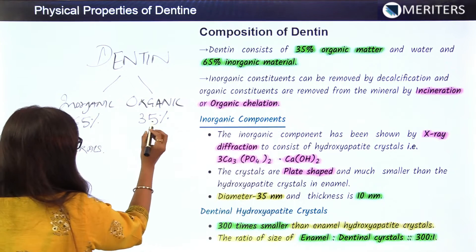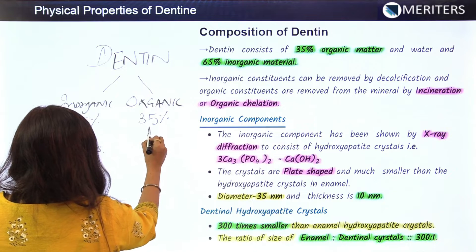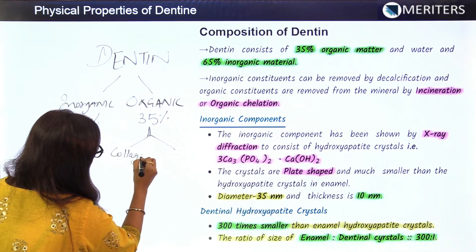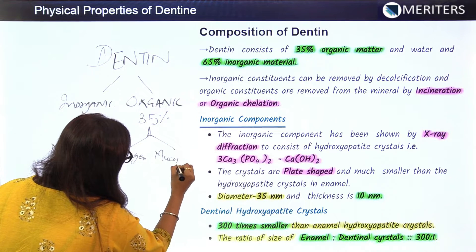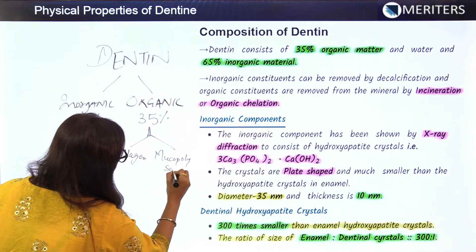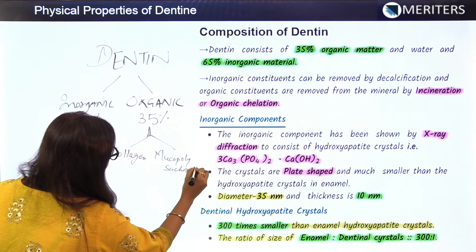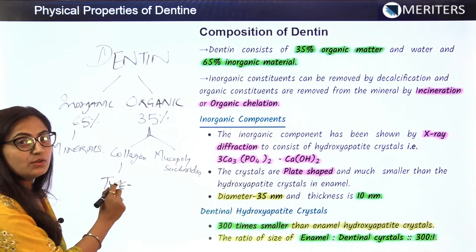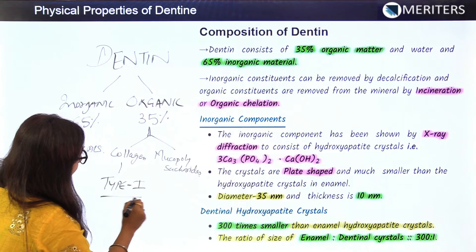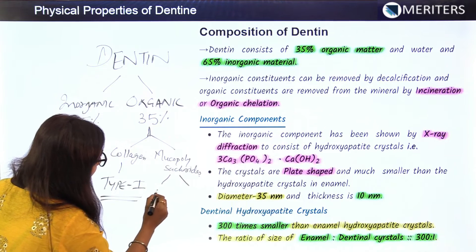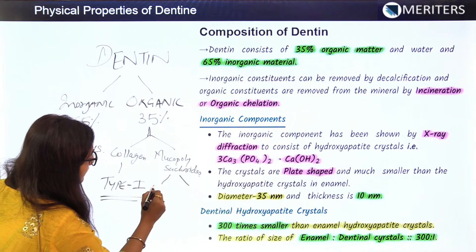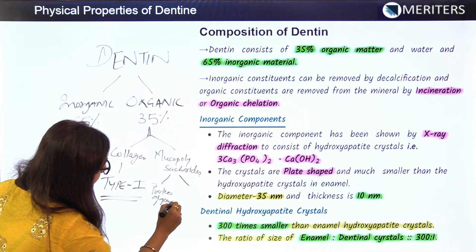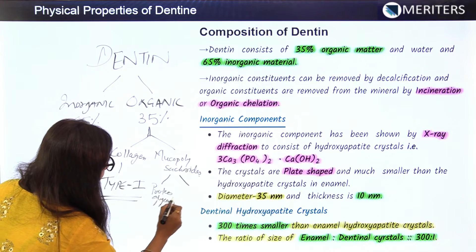The organic component consists of collagen fibrils and mucopolysaccharides. The collagen portion is primarily type 1 collagen. The mucopolysaccharides portion is further divided into proteoglycans and glycoproteins.